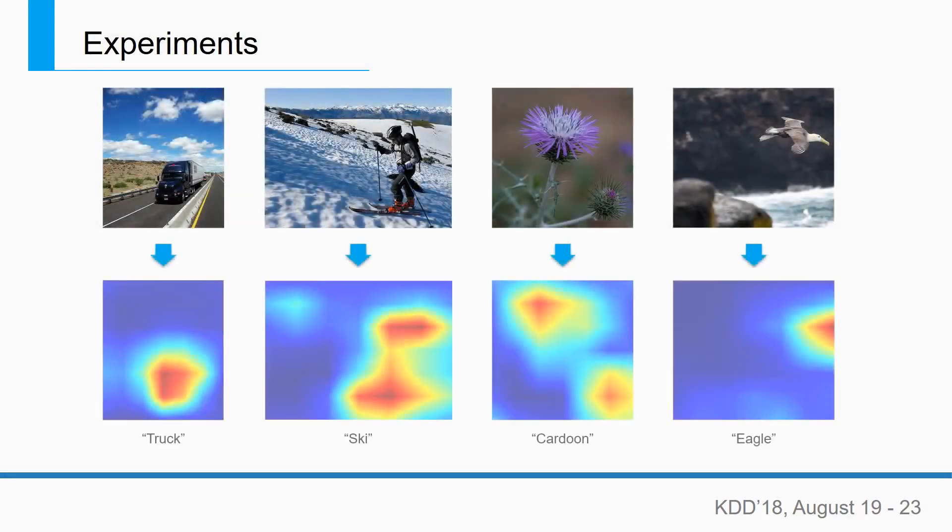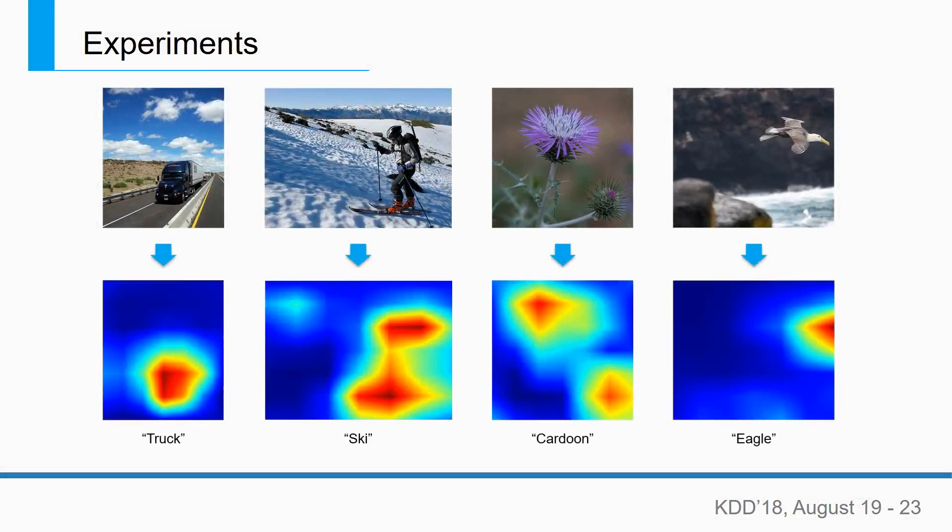Given the input images and the predictions made by the deep neural network, our interpretation method will give corresponding object locations, showing why the deep neural network makes such predictions.